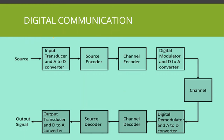Next is the block diagram of digital communication. We have a source — for example, our physical signal such as sound. This source is converted into an electrical signal by a transducer, and the analog signal is also converted to a digital signal. The source encoder then performs source coding, which is basically compression of bits.